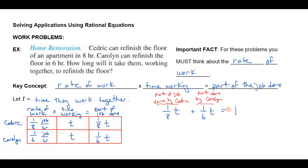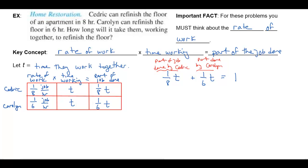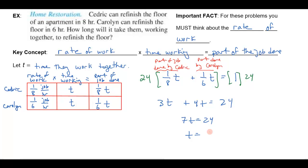If someone had previously done a quarter of the job, there'd only be three-quarters left, and we could adjust accordingly. But here we solve by multiplying both sides by the common denominator 24. Distributing gives 3t + 4t = 24, so 7t = 24, meaning t = 24/7, which is three and three-sevenths hours. That agrees with our intuition — a little more than three hours and certainly less than four hours. So three and three-sevenths hours is how long it takes them working together.